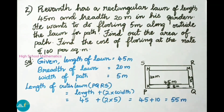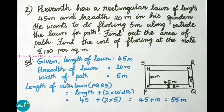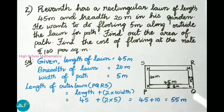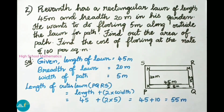We are going to find the length of PQRS, that is the length of the outer lawn. That is the length of the rectangular lawn plus 2 times the width. Width is 5 meters on both sides, so 2 times 5 is 10. Therefore 45 plus 10 equals 55 meters. The length of the outer lawn is 55 meters.